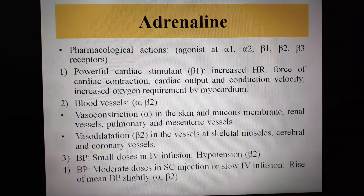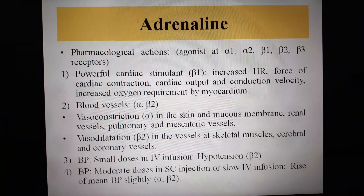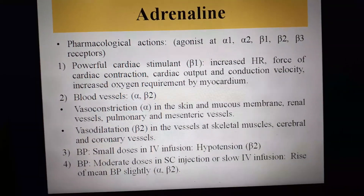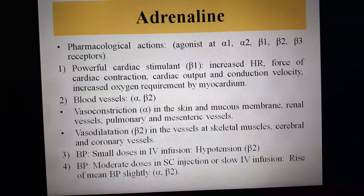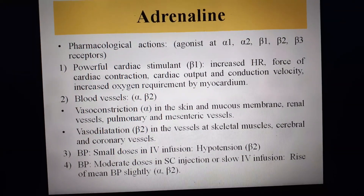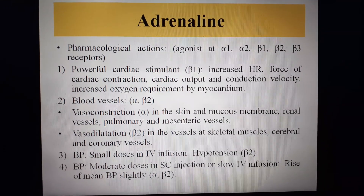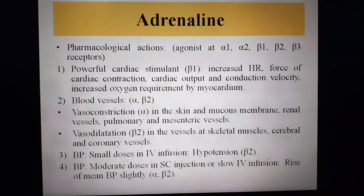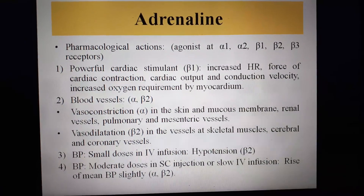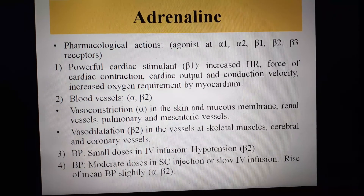Adrenaline is also known as Epinephrine. Its pharmacological actions are due to its agonist action at alpha and beta receptors — both of which are kinds of adrenergic receptors. Specifically, it is an agonist at alpha-1, alpha-2, beta-1, beta-2, and beta-3 receptors.